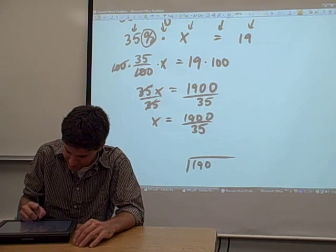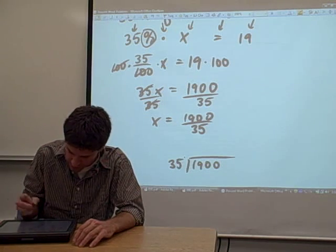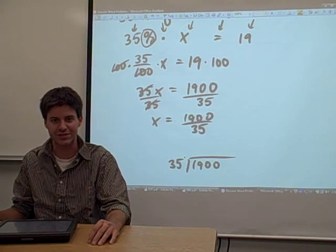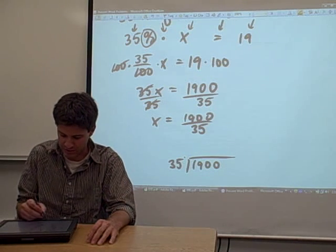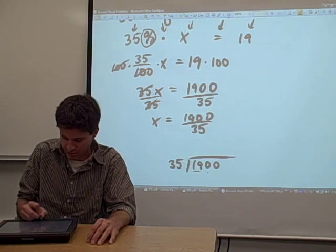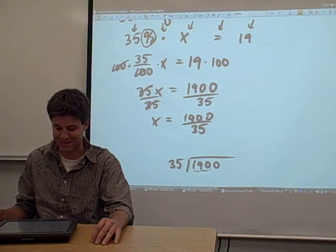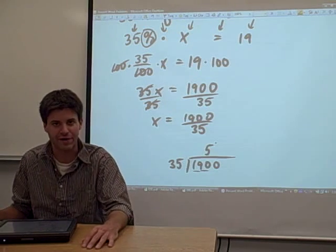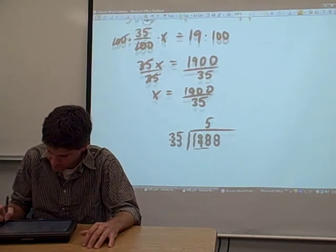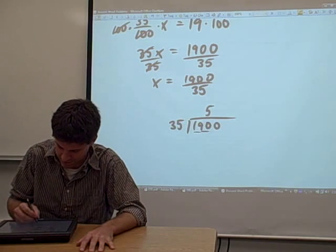So 1900 over 35. We just got to do some long division here. The question is how many times can 35 go into, well it doesn't go into 19 at all. So how many times does 35 go into 190? And I'm not 100% sure, but I'm going to take a stab at 5. We're going to find out here in a second if that's true.